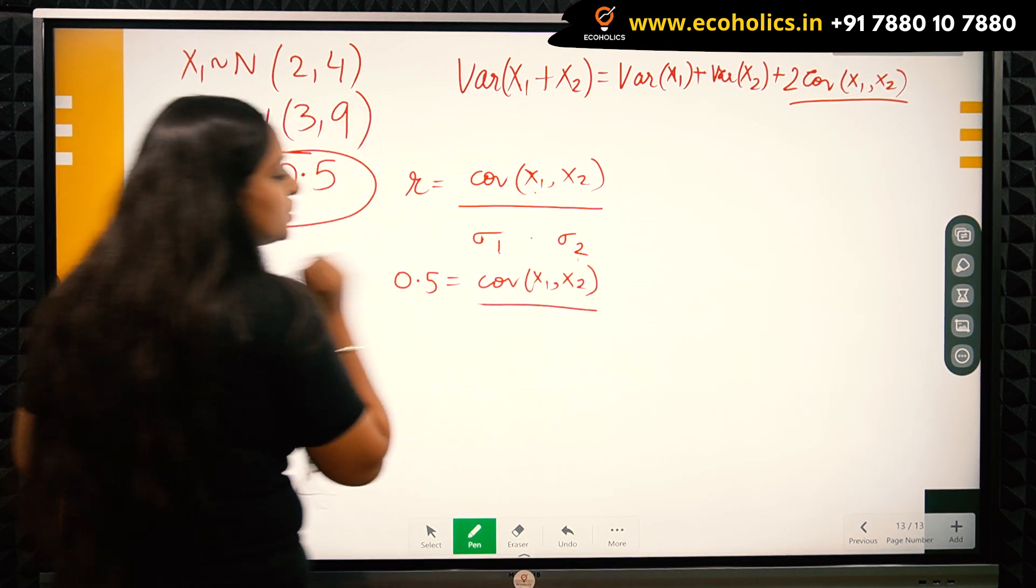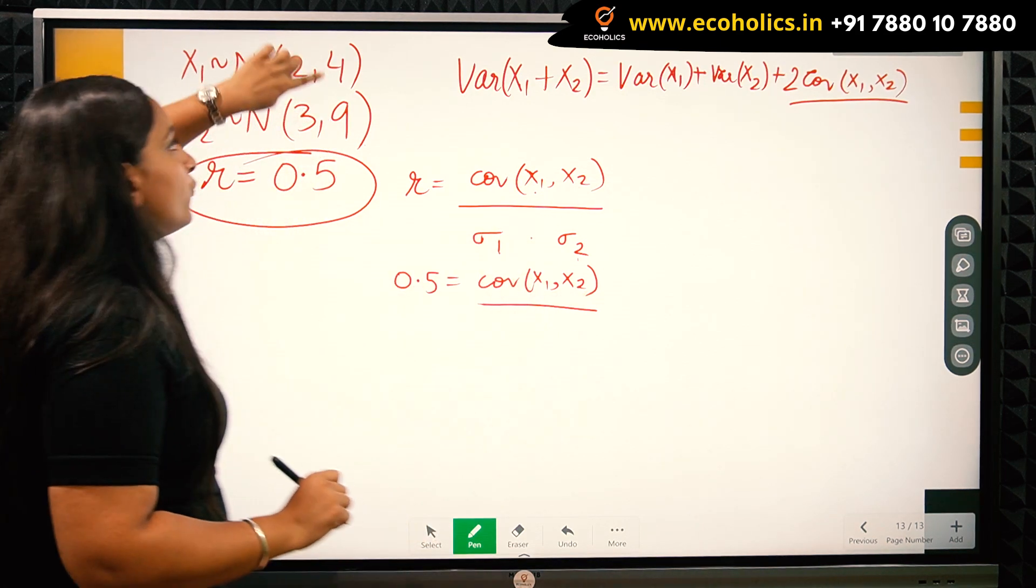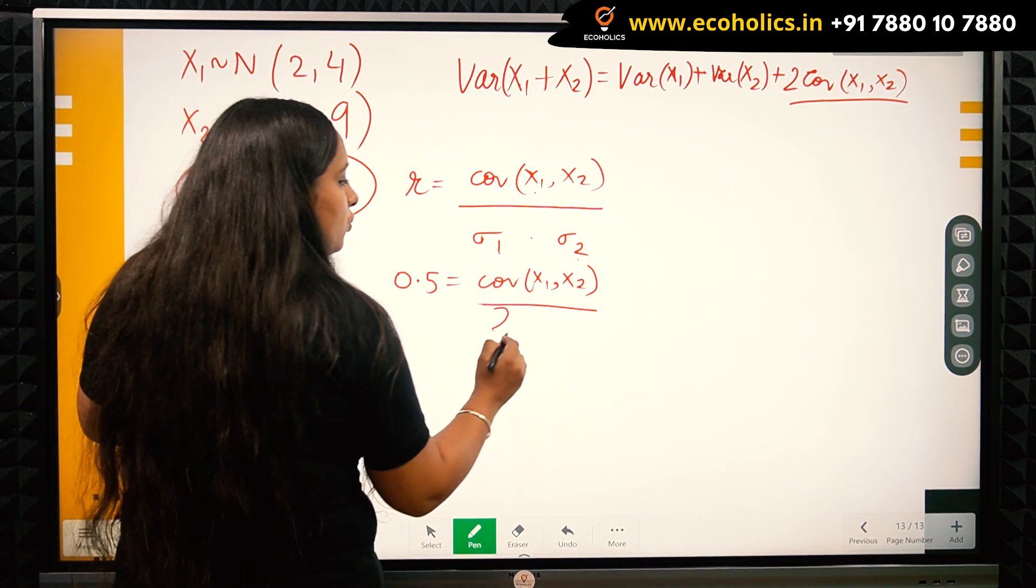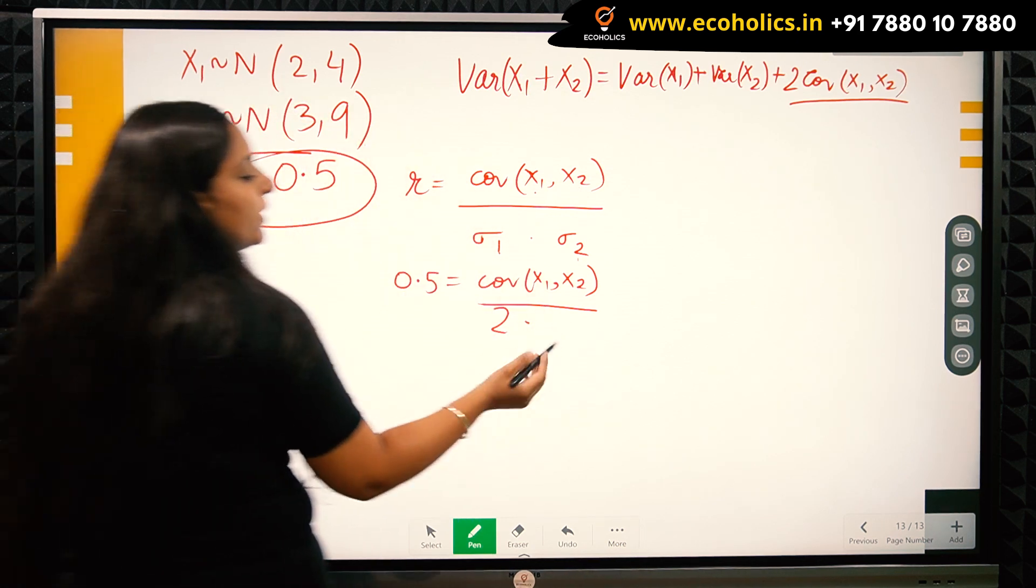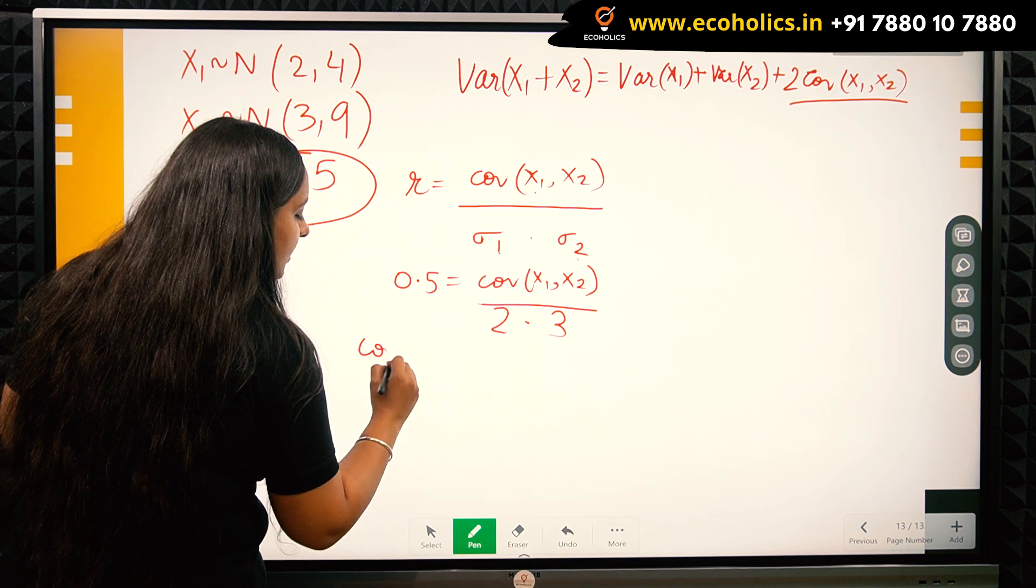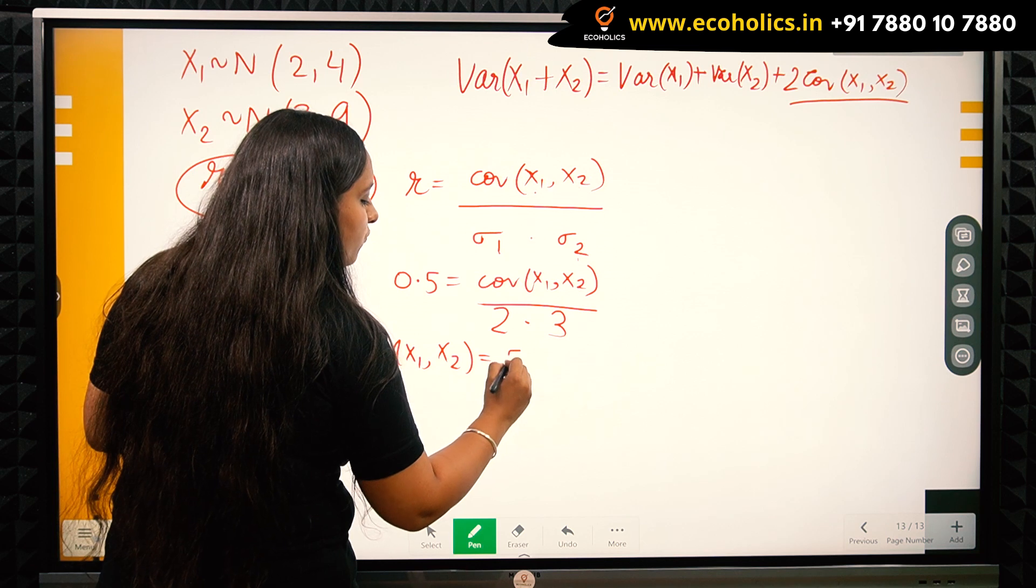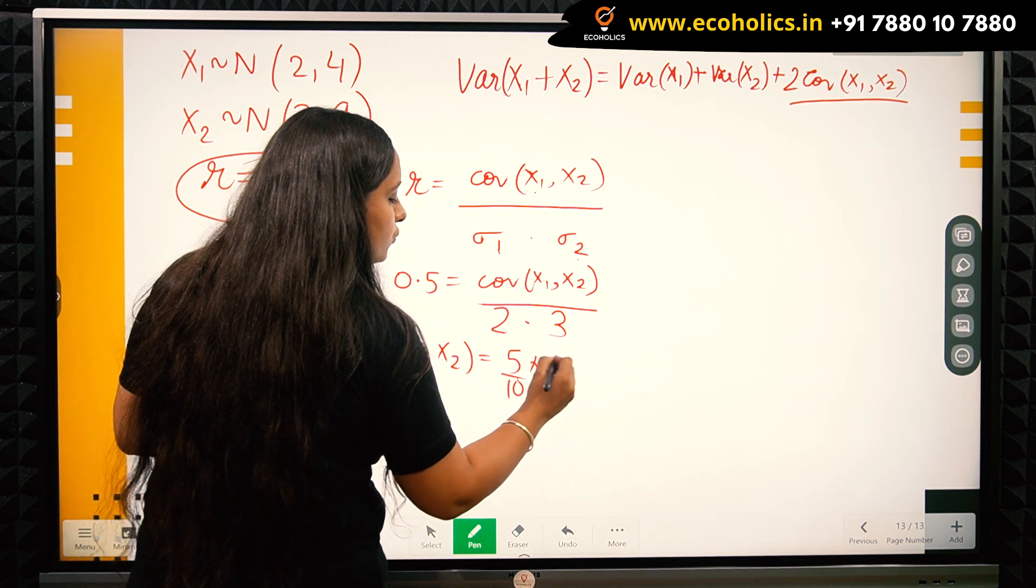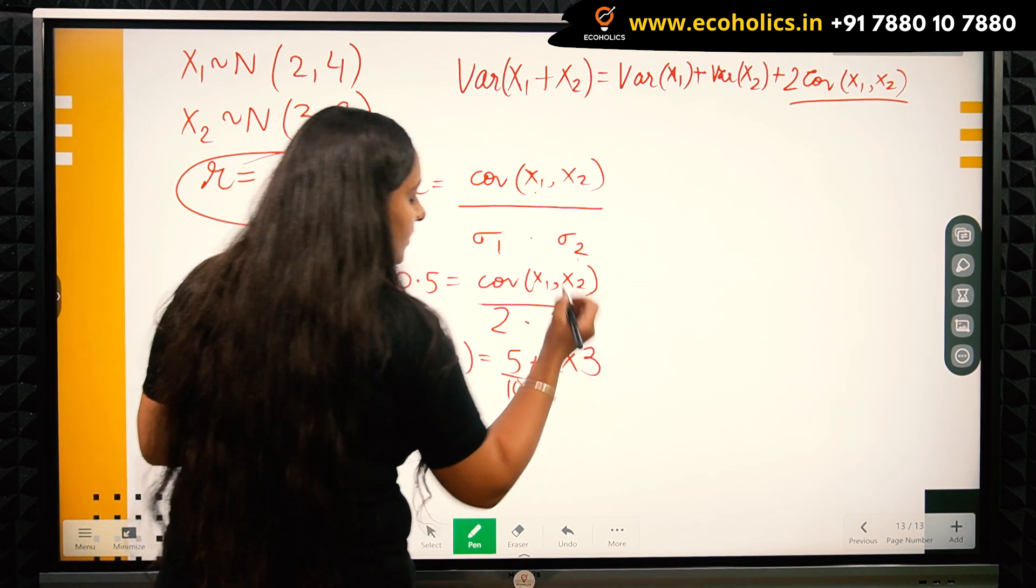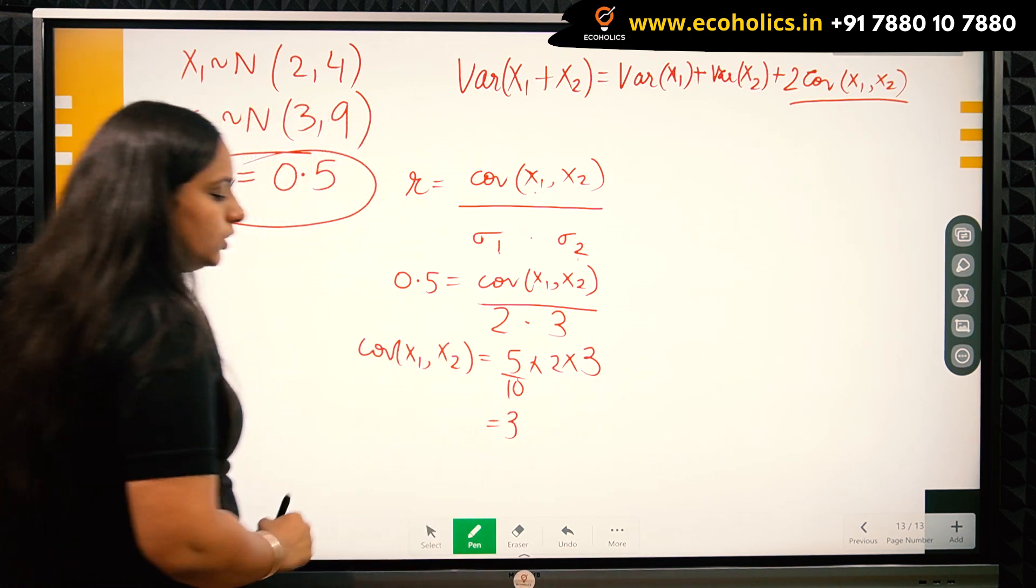Standard deviation is the square root of variance. So square root of 4 is 2, and square root of 9 is 3. If I solve this, covariance of X1, X2 equals 0.5 times 2 times 3, which equals 3. So the covariance is 3.